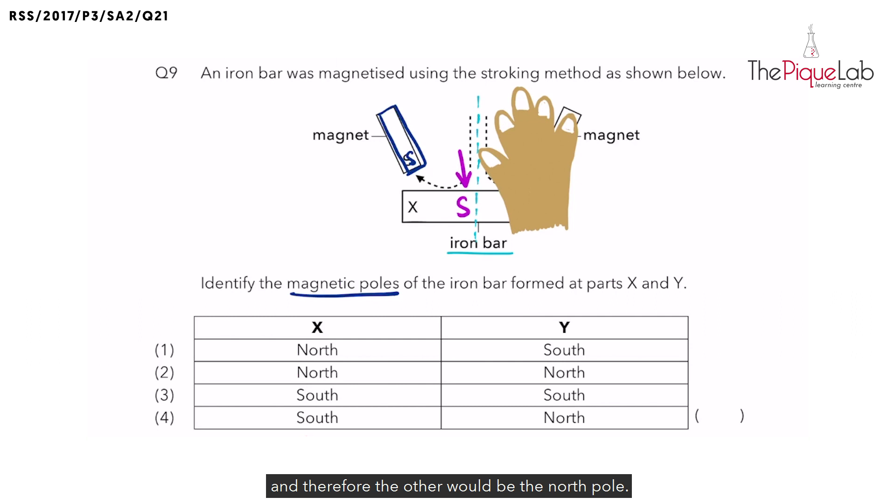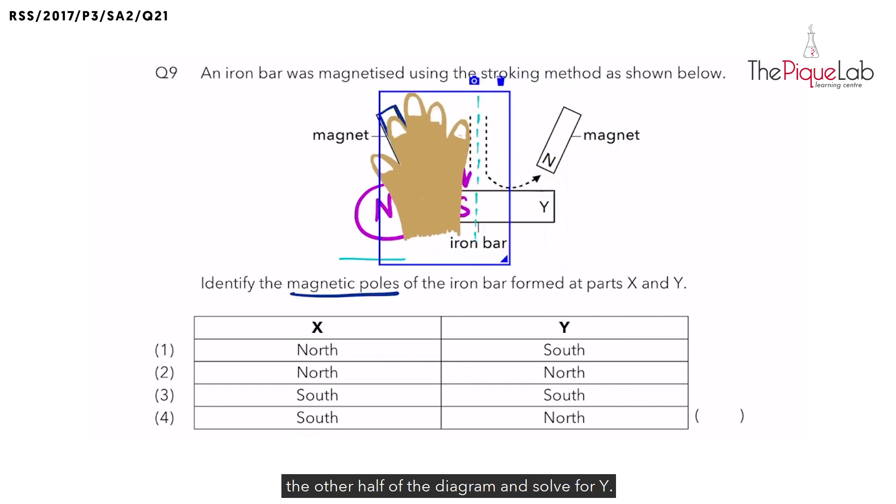So this part would be the South Pole. And therefore, the other would be the North Pole. So X is the North Pole. Now what we're going to do is cover the other half of the diagram and solve for Y.